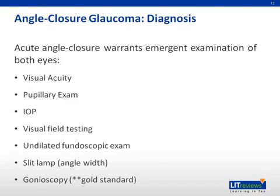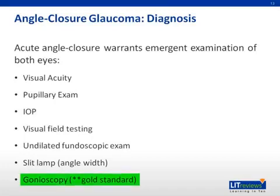All patients presenting with signs or symptoms concerning for angle closure glaucoma should undergo emergent ophthalmologic evaluation. This should be performed in both eyes and should include testing of visual acuity, a pupillary examination, measurement of intraocular pressure, visual field testing by confrontation and/or formal methods, an undilated fundoscopic examination — as dilating drops may exacerbate the symptoms — and a slit lamp exam to estimate the width of the angle. The gold standard for measuring the width of the angle is gonioscopy, though this requires a special lens.